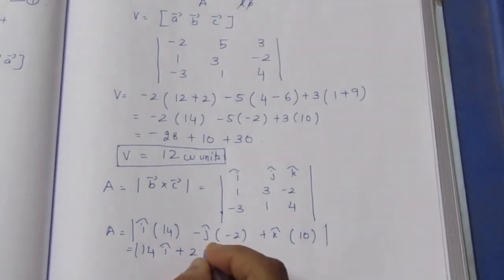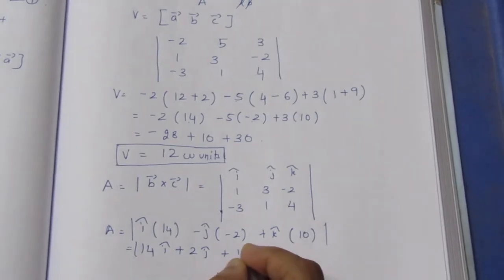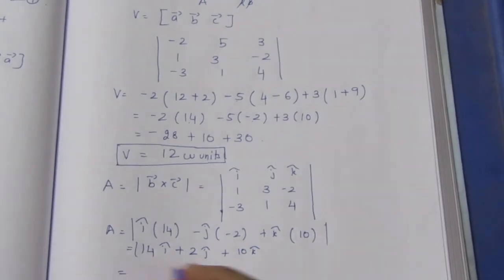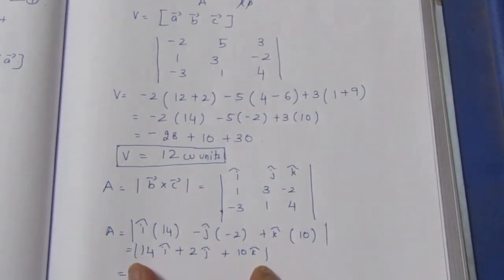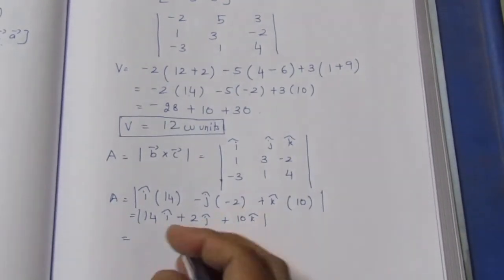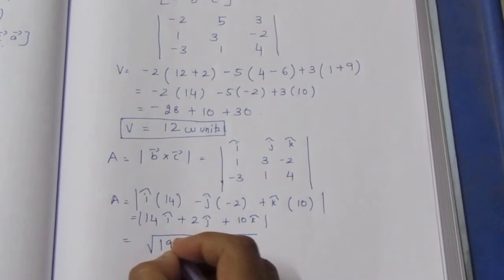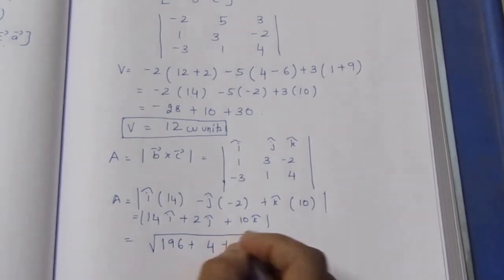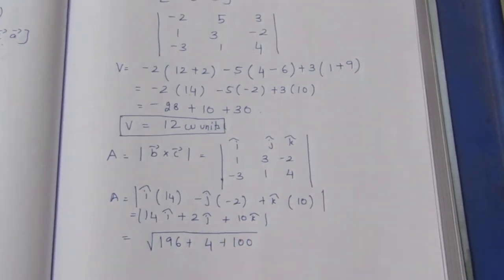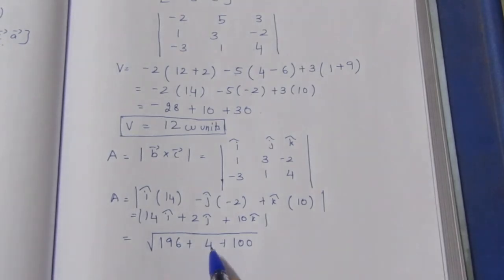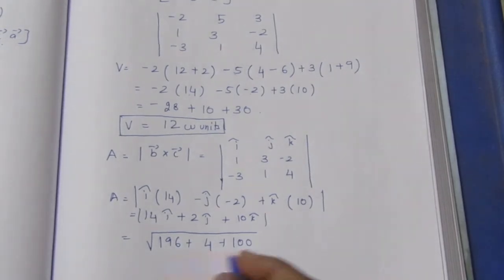This gives 14i + 2j + 10k. The modulus is the square root of the sum of coefficients squared: √(14² + 2² + 10²) = √(196 + 4 + 100) = √300.